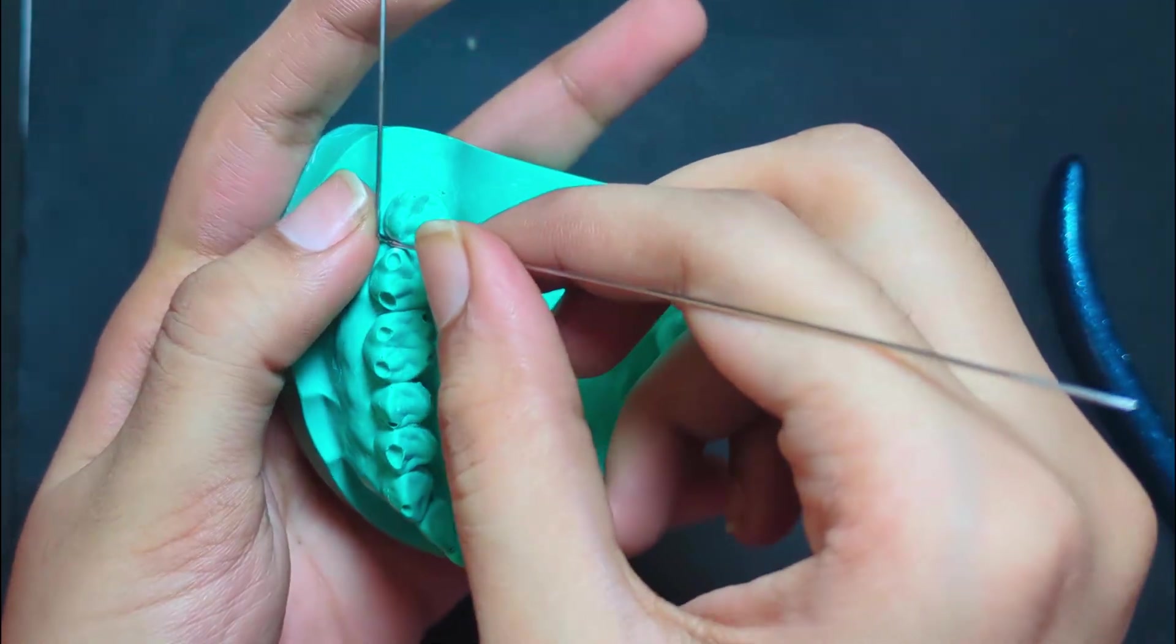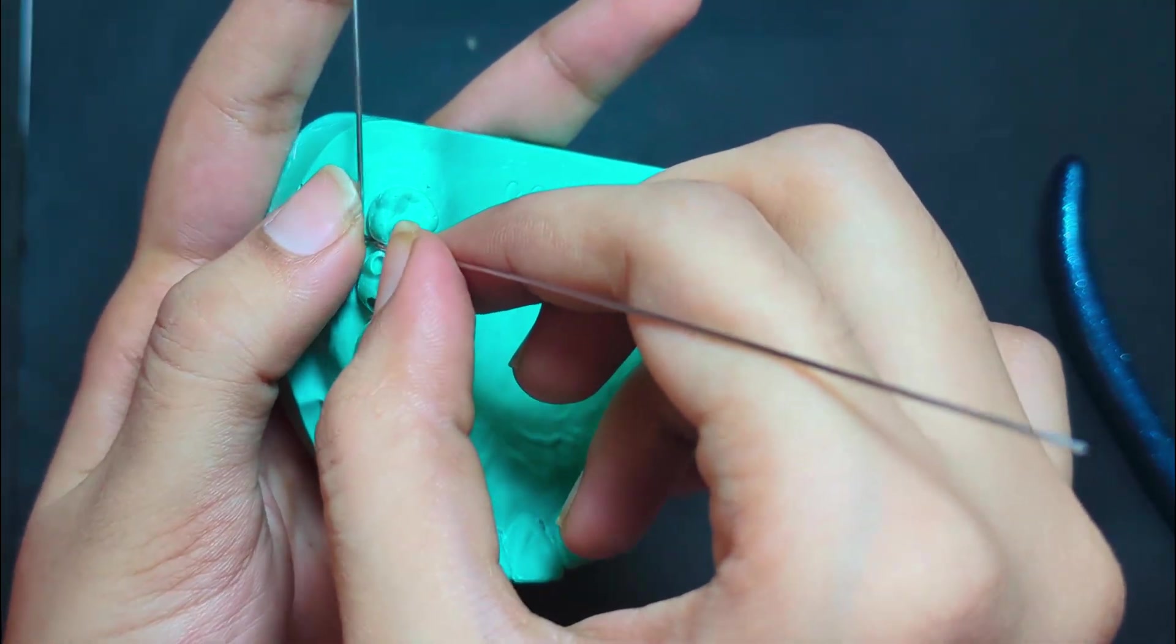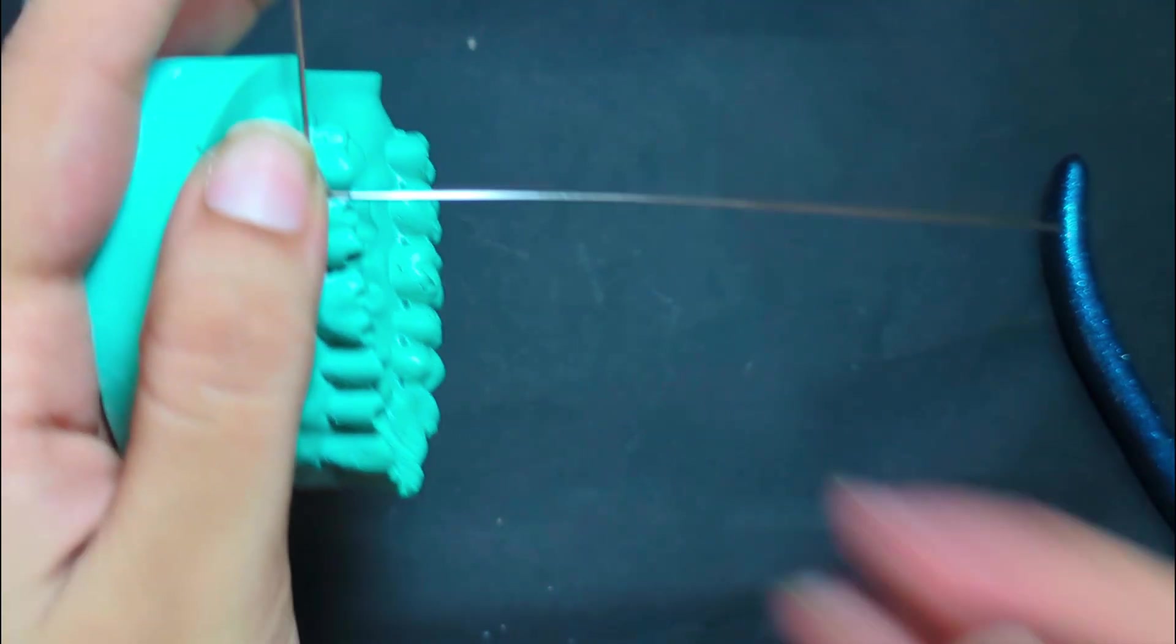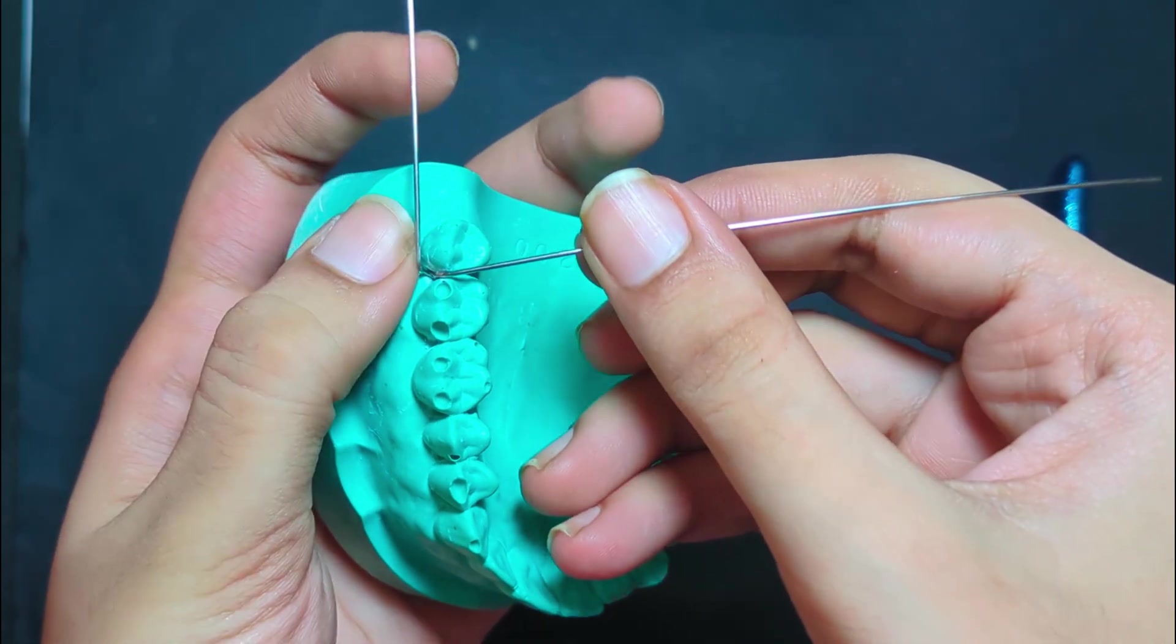Keep it near the tooth and mark the point at the height of the occlusoproximal surface of the tooth. Give a bend and adjust the ends of the wire to rest on the occlusoproximal surface.